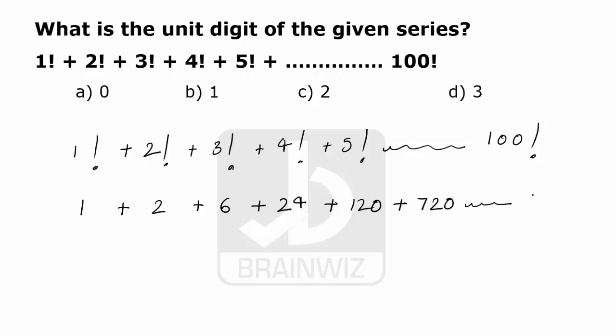And so on to 100 factorial. We need to find out the units digit. To get the units digit, we take 1 plus 2 plus 6 plus 4 plus 0 plus 0.